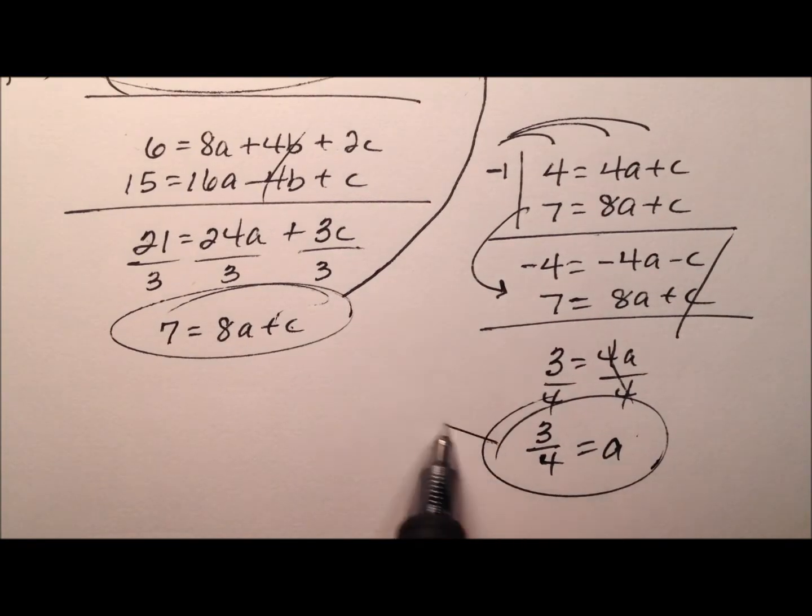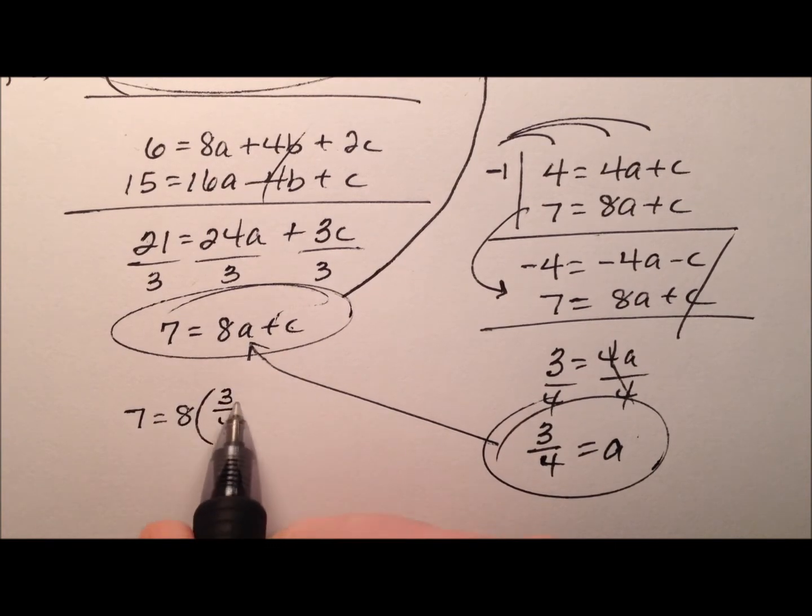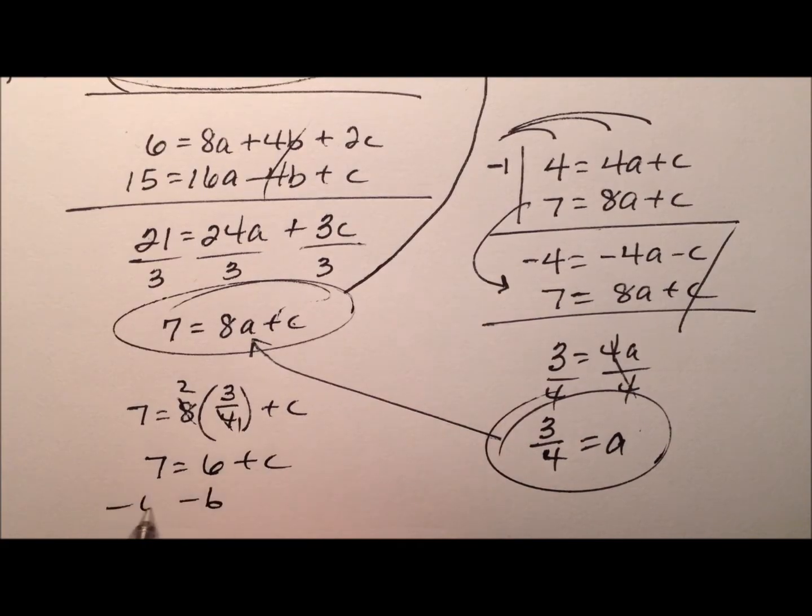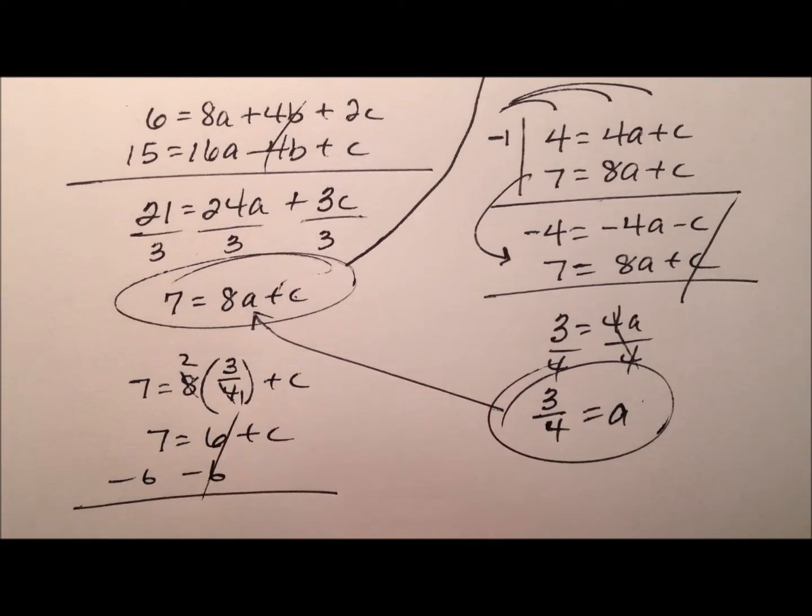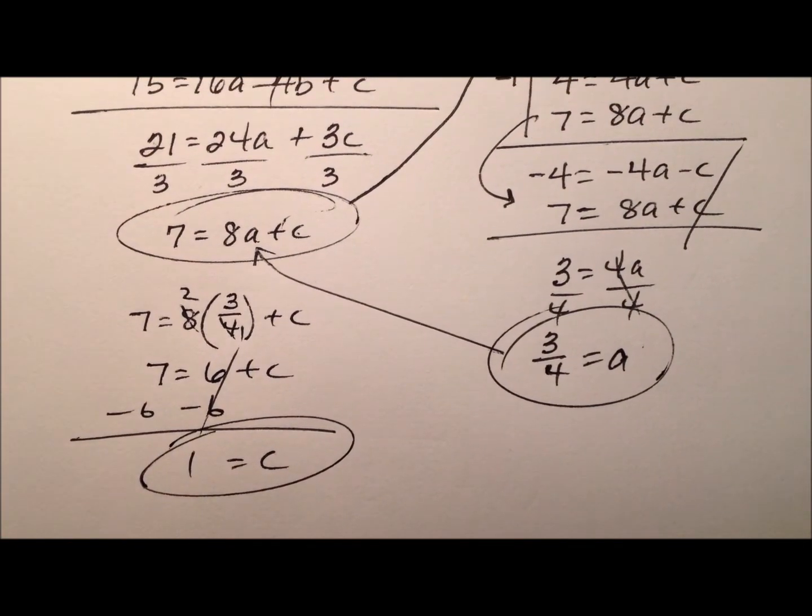If my a is 3 fourths, let's plug that in. So 7 equals 8 times a, which is 3 fourths, plus c. So we have 7 equals 6 plus c. When I subtract 6, looks like my value of c is 1. Great, so now I have two of these, so now I just need to plug them in and find that value for b.